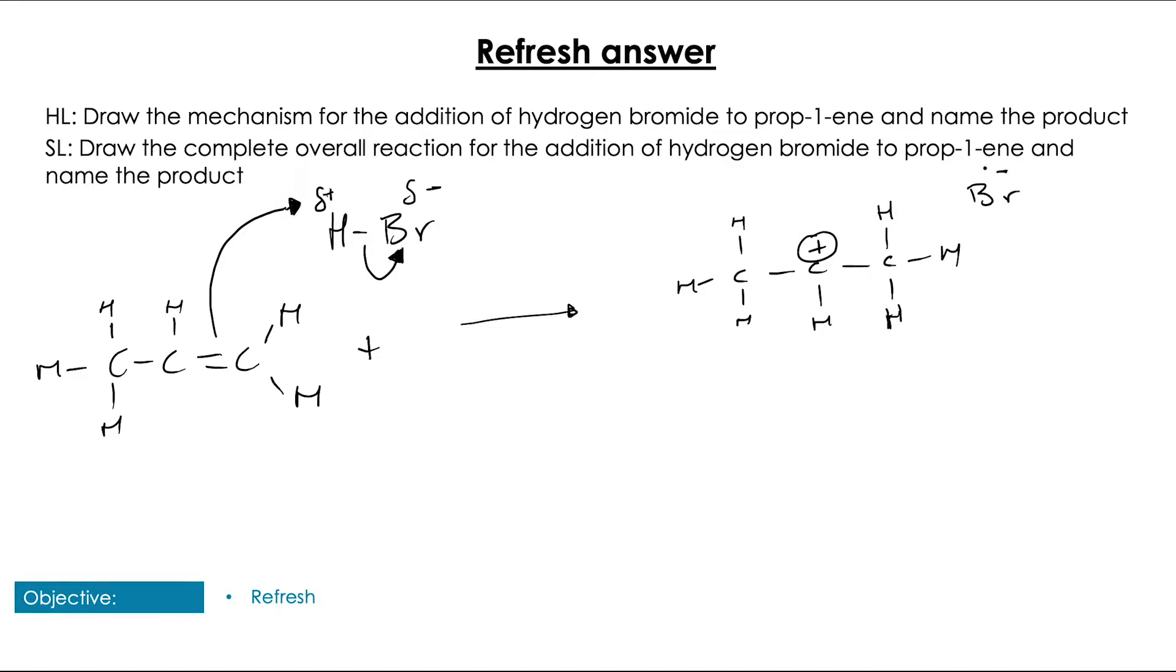We've got Br- floating around which is going to attack this carbocation and attach itself just there, giving us the 2-bromopropane product. For the SL, you would have just had to write this as an overall reaction of C3H6 plus HBr goes to C3H7Br.